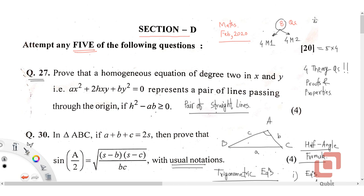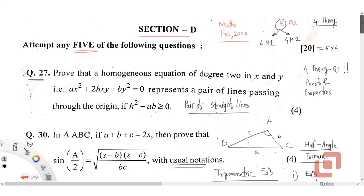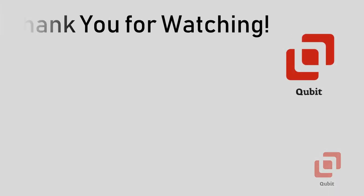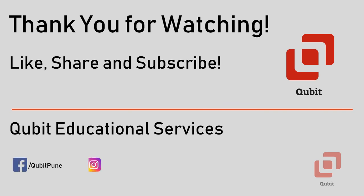So out of the eight questions in Section D, four are theory questions: two from Paper 1 — Question 27 from pair of straight lines and Question 30 from trigonometric equations — and two from Paper 2 — from indefinite integration and definite integration respectively. In the next video, we are going to solve the remaining questions from Section D, which are numerical problems.